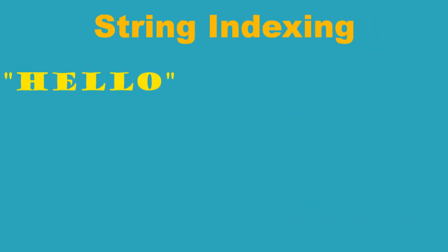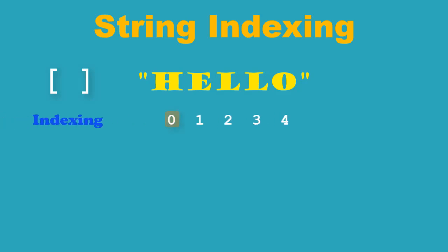Square brackets can be used to access individual characters of a string. Python uses zero-based indexing means the first character is at zero index, second at first, and so on. If you give an index which is beyond the end, it will give an exception of string index out of range.